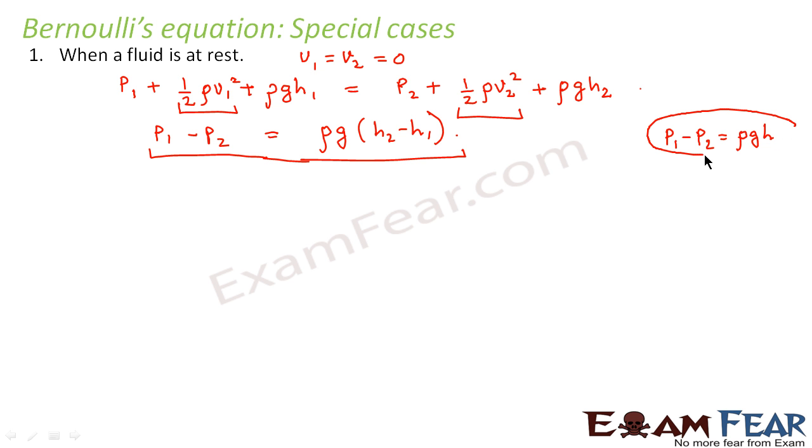We studied a relation something like this where we introduced atmospheric pressure, gauge pressure, as well as the absolute pressure. So we arrived at a similar expression. So we can say that from Bernoulli's equation, we can revert back to the scenario and we can prove the correct result for a fluid at rest.